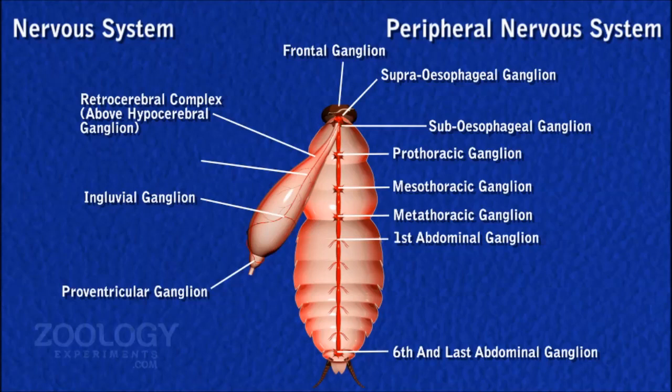Nerves also go to the spiracles and heart, whereas the last abdominal ganglion supplies nerves to the muscles of the last three abdominal segments, reproductive organs, copulatory appendages and anal cerci.